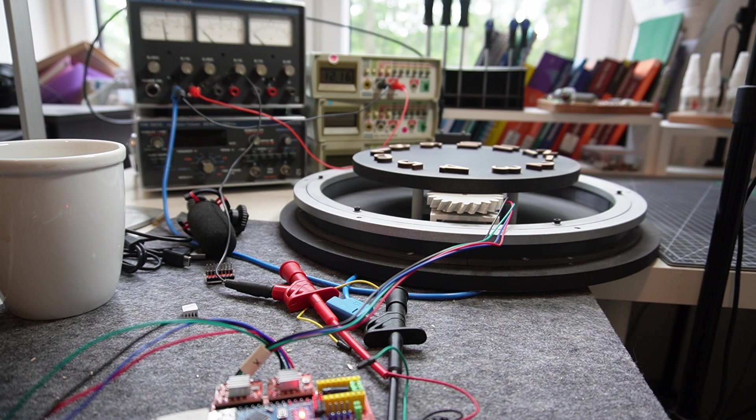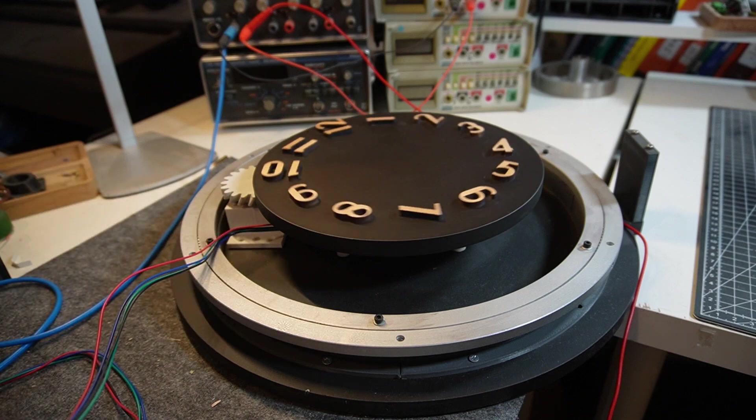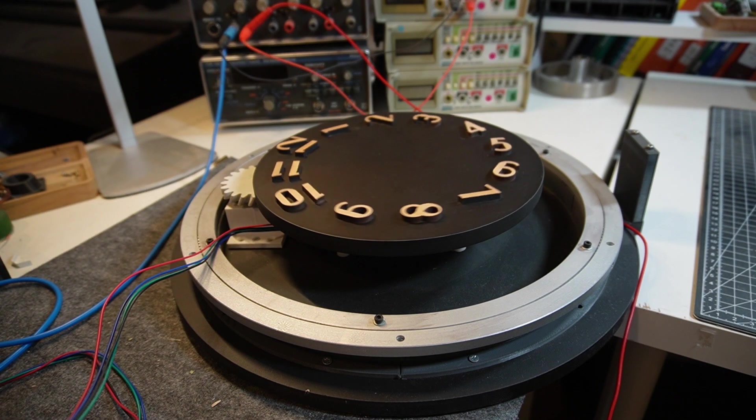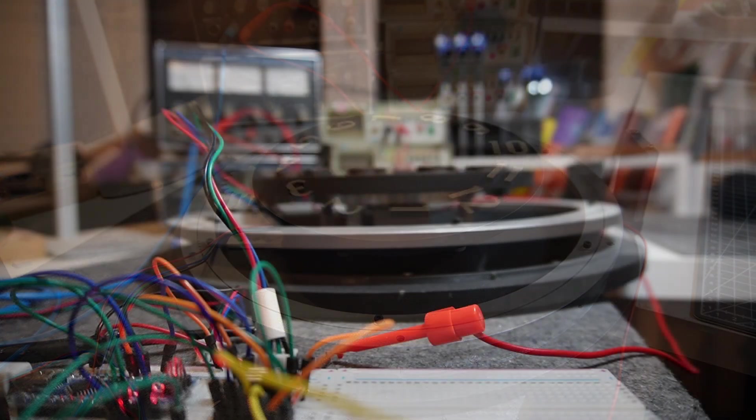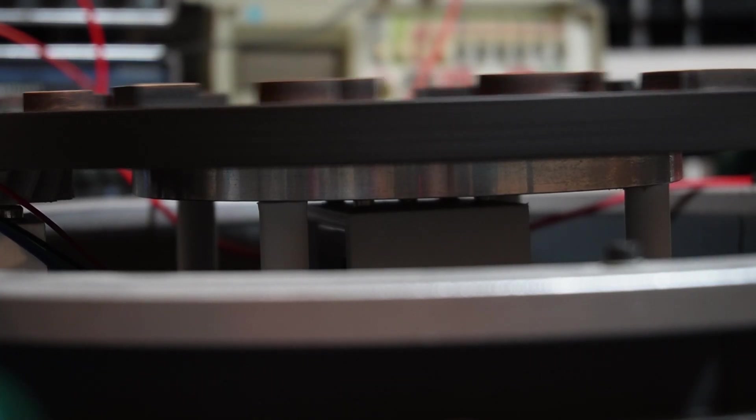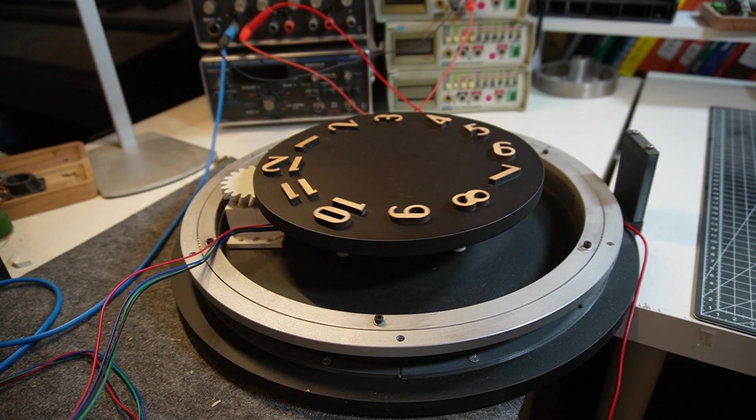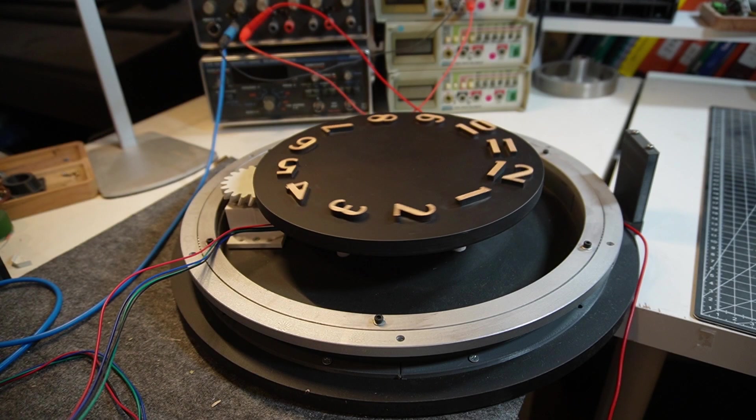As you can hear the stepper motors are very loud, that's because microstepping isn't enabled yet and when I enable microstepping the stepper motors should be a lot quieter. Now microstepping is enabled, normally a NEMA 17 motor needs 200 steps per revolution and microstepping breaks those steps into tiny little ones, making your motor move super smooth and a lot quieter as you can hear.